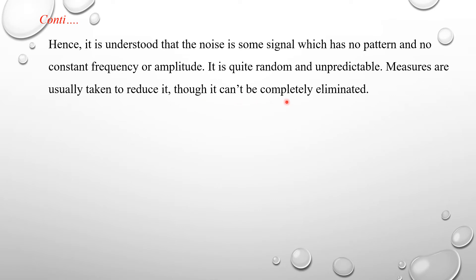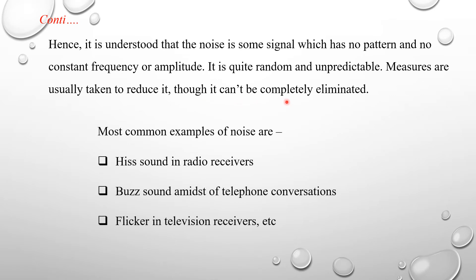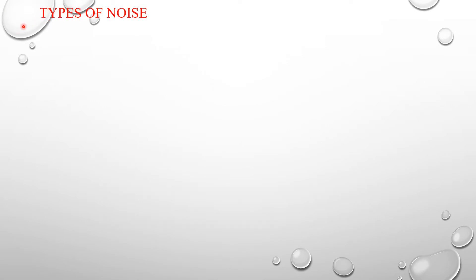Noise has no constant frequency or amplitude; it is quite random and unpredictable. Measures are usually taken to reduce it, though it cannot be completely eliminated. Common examples of noise include hiss sound in a radio receiver, background sound in telephone conversations, and flicker in a television receiver.